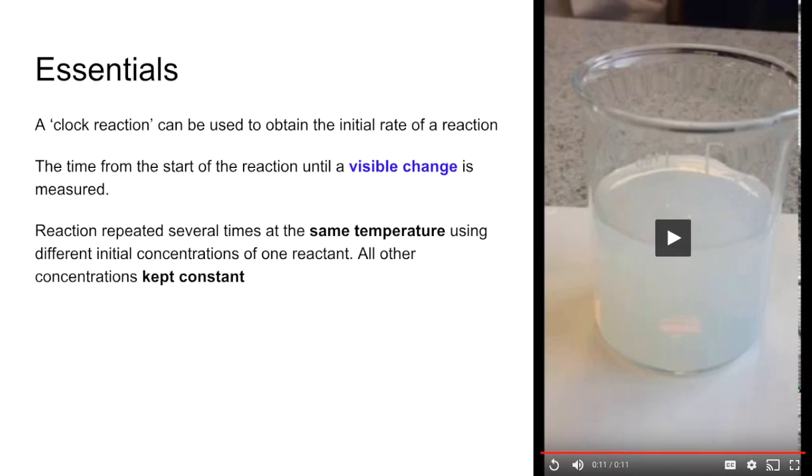Then the reaction is repeated several times at the same temperature but using different initial concentrations of one reactant. All of the other concentrations must be kept constant and you basically just measure the time for that visible change to take place at those different concentrations.